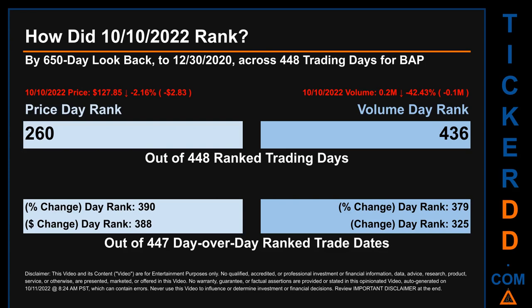Hello, my name is Magnus. How did the 10th of October 2022 rank for BAP? By 650 calendar day look back to December 30, 2020, across 448 trading days, the 10th of October 2022 price ranked 260, while its volume ranked 436. Each of the 448 trading days were ranked amongst themselves by highest end-of-day price and volume, with a rank of 1 being the highest and 448 being the lowest-ranked day.